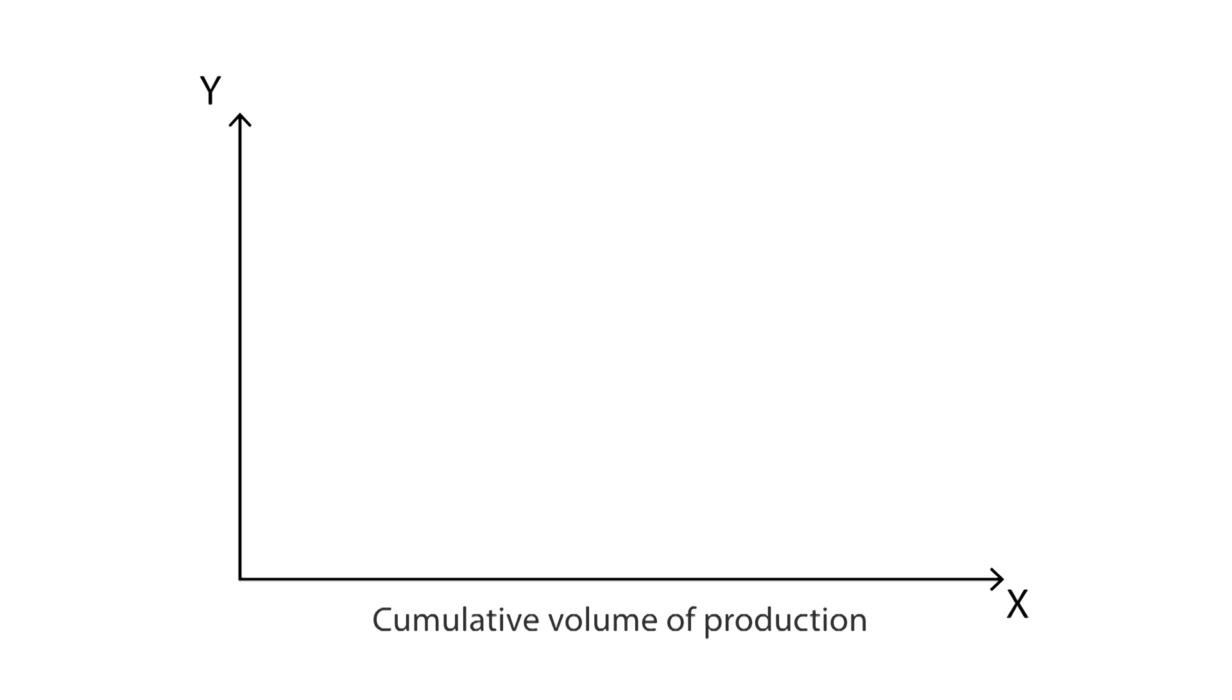This graph shows the cumulative volume of production (X) on the horizontal axis and the average time per unit (Y) on the vertical axis. This is the learning curve, which is downward sloped.